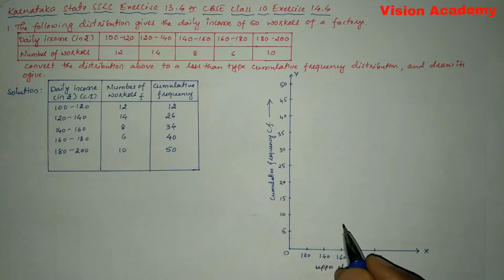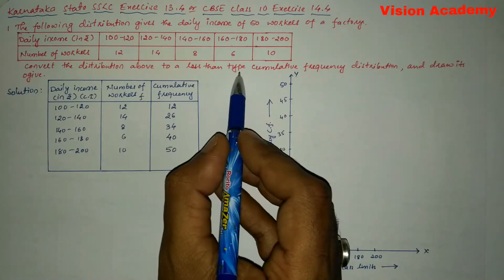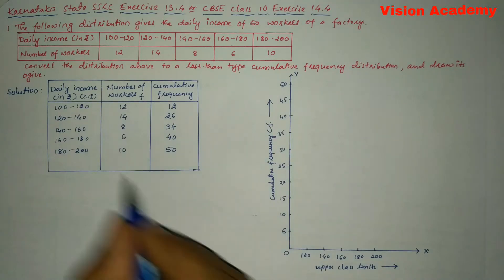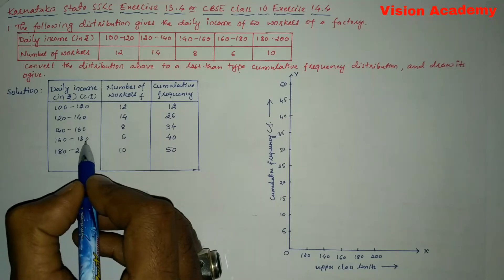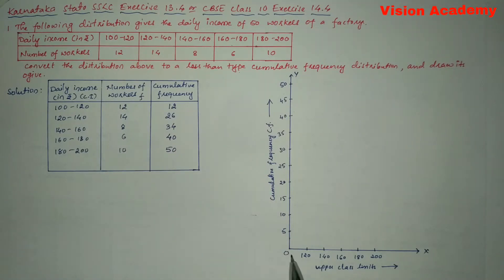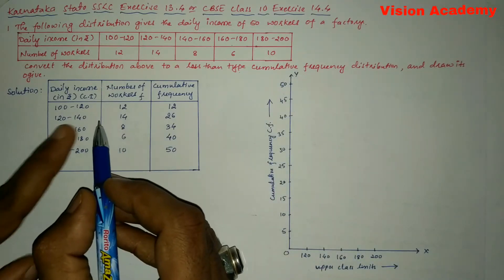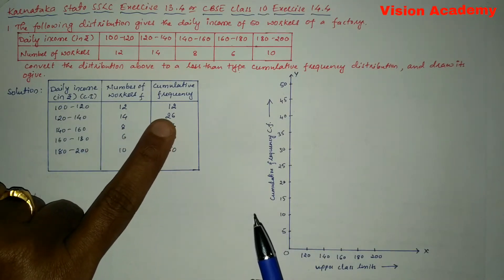Now let us plot the graph of cumulative frequency against upper class limit. For the less than type cumulative frequency, we use the upper class limits: 120, 140, 160, 180, and 200 on the X-axis, and cumulative frequency on the Y-axis.